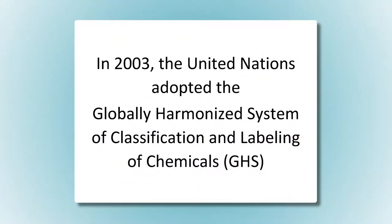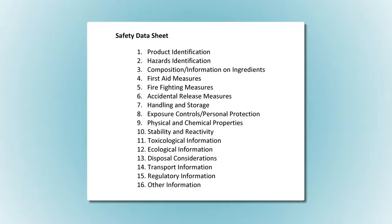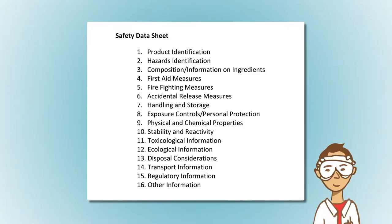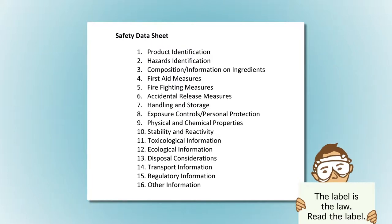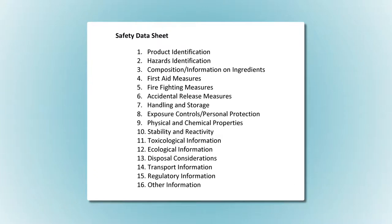The GHS includes criteria for classifying health, physical, and environmental hazards. It specifies what information should be included on labels and safety data sheets, or SDS. An SDS explains the hazards, precautions, and response actions for a product in medical or first aid treatment.